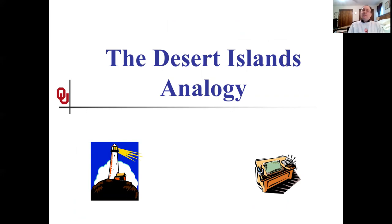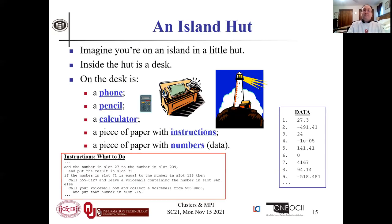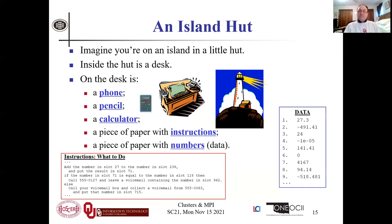Now let's talk about how the nodes of a cluster communicate with each other — by analogy. It's easy to imagine a job that needs only a single core or single node. But if you have to communicate over the network, here's the analogy: imagine you're on an island in a little bungalow on vacation. Inside the bungalow you've got a desk with a phone, a pencil, a calculator, and two pieces of paper — one with a list of instructions, and another with a collection of data, a big pile of numbers.